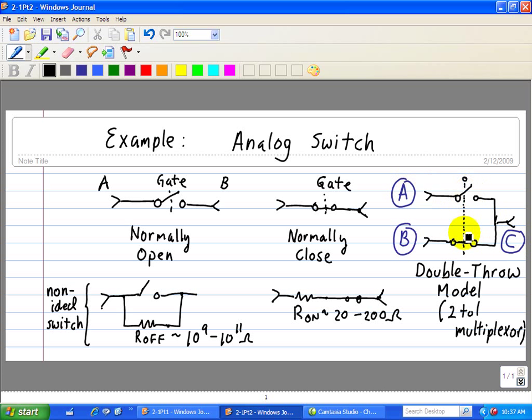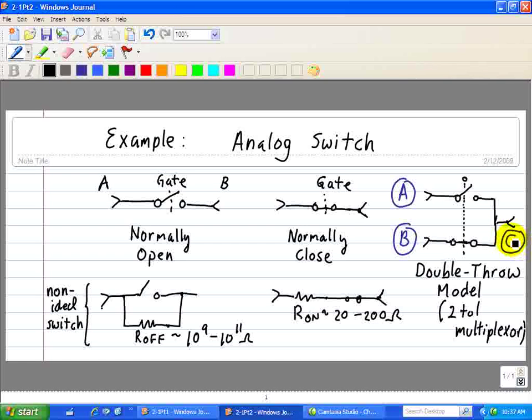And when it's normally in normal operation without any applied voltage, then B is normally connected to C.